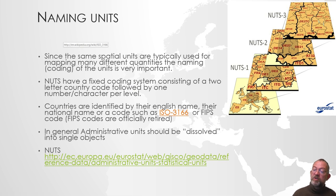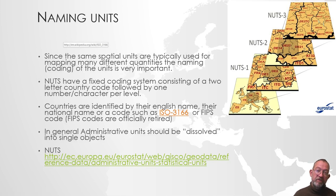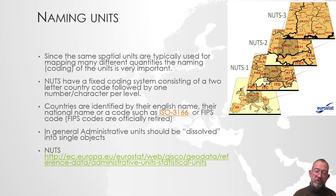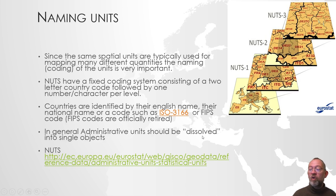There's another thing you also have to be aware of: administrative units are typically made up of many small areas — for instance, the Municipality of Copenhagen consists of lots of small areas in the harbour and small islands. So it's a good idea to make sure that you are working with what is called a dissolved dataset, where all of the areas that belong to one unit have been dissolved and merged together into one unit.